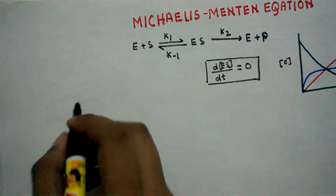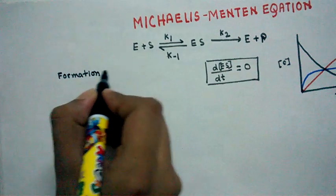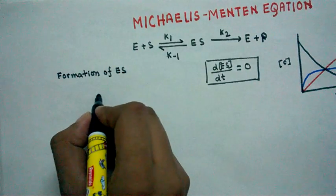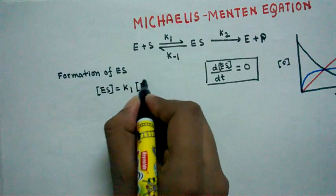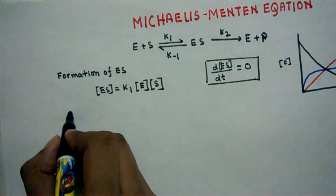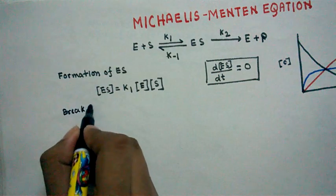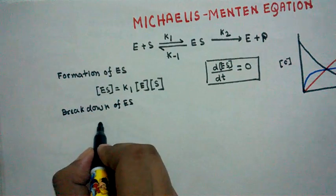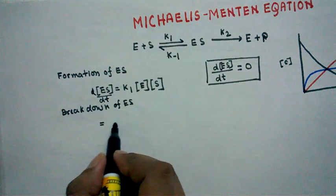Now from this, let's find the rate equations. The rate of formation of ES: we can write that the rate of formation equals k1 times the concentration of enzyme times the concentration of substrate. Then we consider the rate of breakdown of the enzyme-substrate complex.